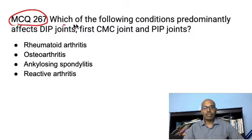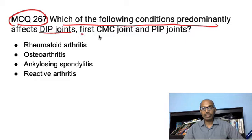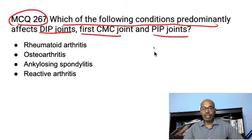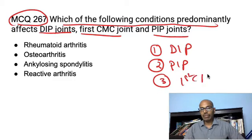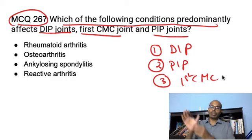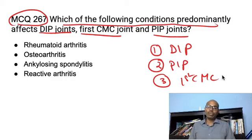The question asks: which of the following conditions predominantly affects DIP joints, first CMC joints, and PIP joints? The DIP joints are the distal interphalangeal joints. The PIP joints are the proximal interphalangeal joints. And the third is the first CMC joint — the first carpometacarpal joint at the thumb base. So which condition has this kind of pattern?